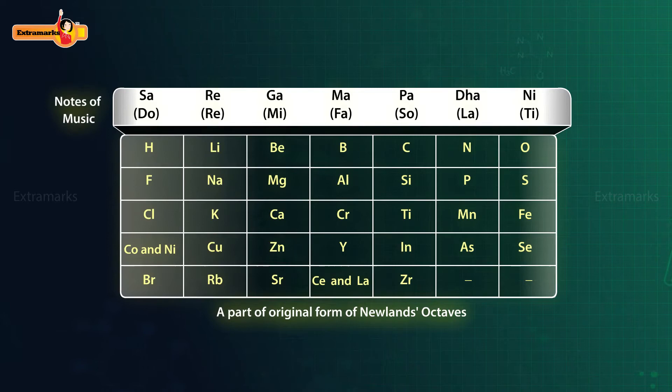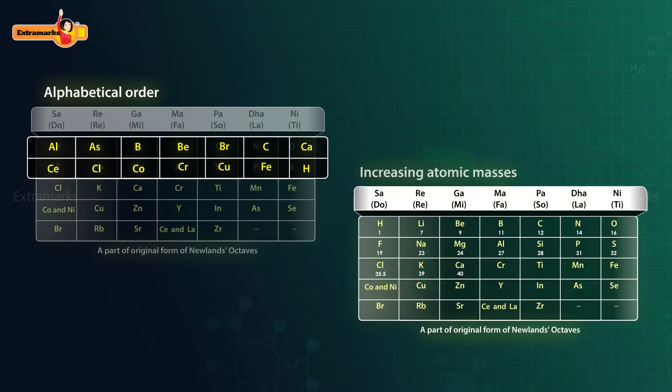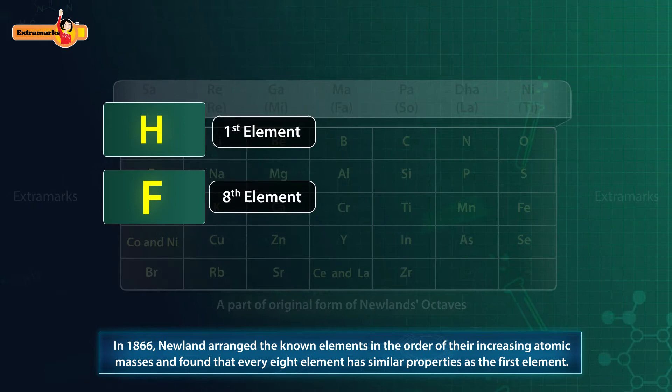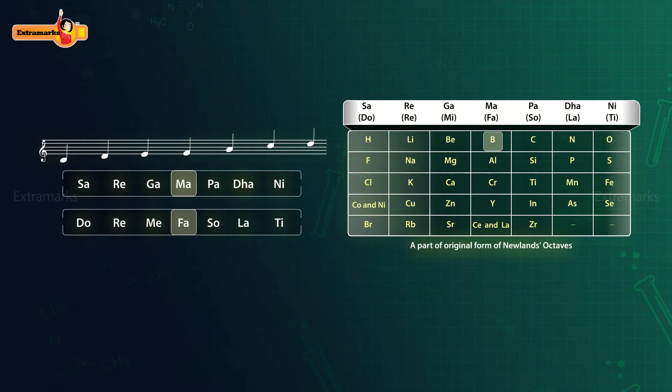He arranged them in the form of a table. But on what basis — the names in alphabetical order or in the increasing atomic masses? Of course, on the basis of atomic masses. In 1866, Newland arranged the known elements in the order of their increasing atomic masses and found that every eighth element has similar properties as the first element. Being a famous musician, he compared his observation with the octaves found in Indian and Western music. Therefore, he called this Newland's Law of Octaves.